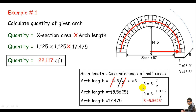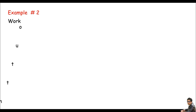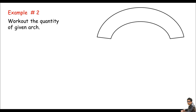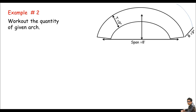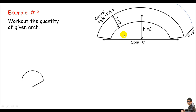Let me jump to another example. We are asked to work out the quantity of a given arch. As I can see, this is a segmental arch with a span of 8 feet, a thickness of 9 inches, a breadth of 9 inches, and a central angle of 106 degrees. The central angle is the angle subtended by two radii. Everything is clearly given in the diagram.